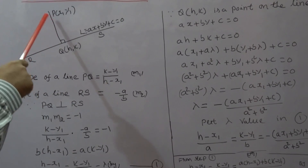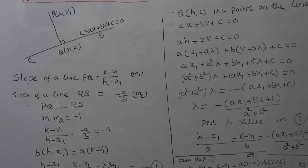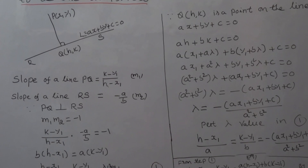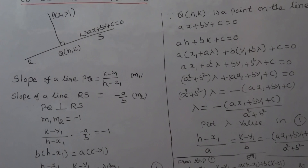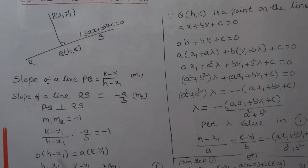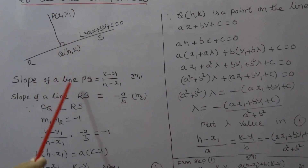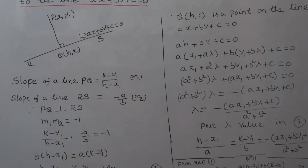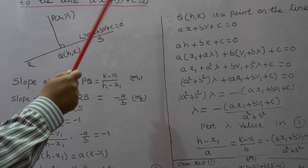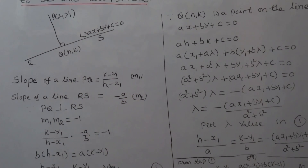Now, we first find the slope of line PQ. We know that the slope of a line segment joining (X1, Y1) and (X2, Y2) is (Y2 - Y1) / (X2 - X1), that is the difference of Y-coordinates by the difference of X-coordinates. The slope of PQ is (K - Y1) / (H - X1), say it is M1. The slope of line R, that is AX + BY + C = 0, is -A/B, say it is M2.